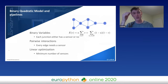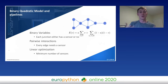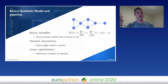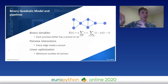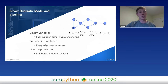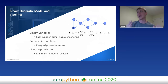Going back to our pipe problem, you can see why this is a binary quadratic problem. We have binary variables: should junction one have a sensor or not? We have pairwise interactions — each pipe must have a sensor, which is a quadratic interaction between two different variables. And we have the linear optimization: I want to do it as cheaply as possible.